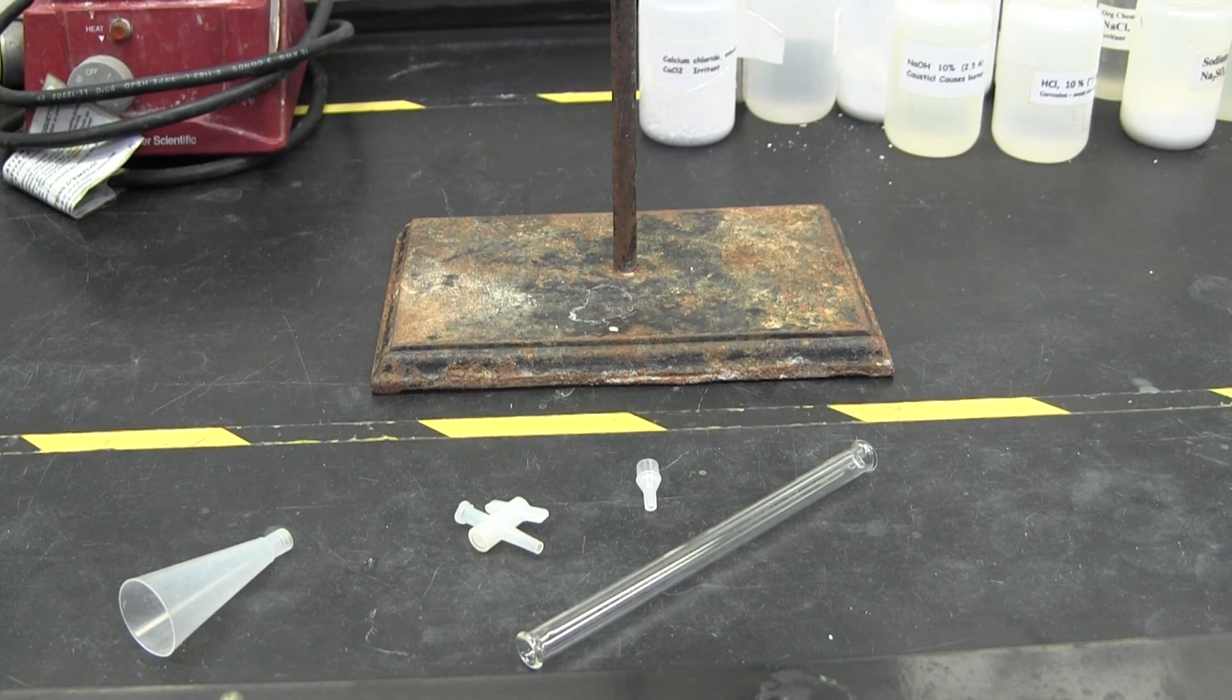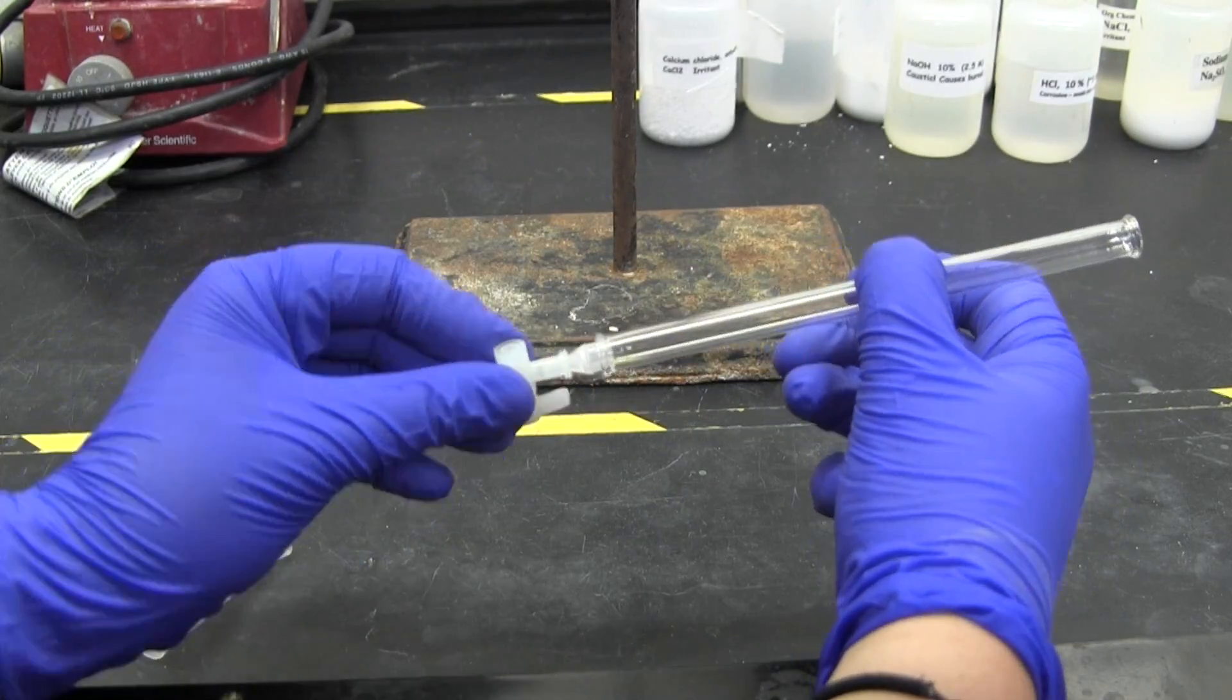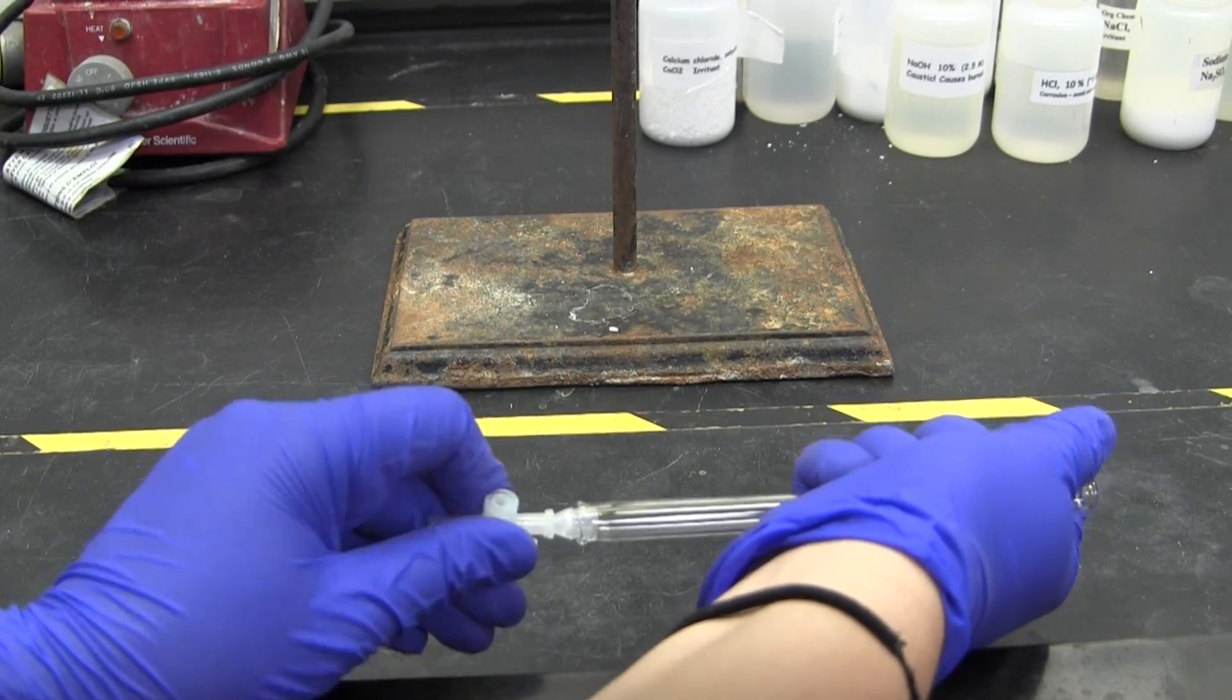You will use the Microscale Kit for this setup. A picture of the proper setup is in your lab binder. Make sure to fit the stopcock tightly into the bottom of your column.